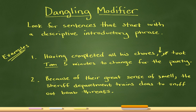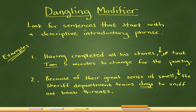Let's go to number two: 'Because of their great sense of smell, the sheriff's department trains dogs to sniff out bomb threats.' Again, we have an intro phrase: 'Because of their great sense of smell.' What in this sentence has a great sense of smell? Is it the sheriff's department? No, not exactly. The dogs in this sentence have the great sense of smell. So dogs should be the thing that comes right after the comma so that it's described by this intro phrase.